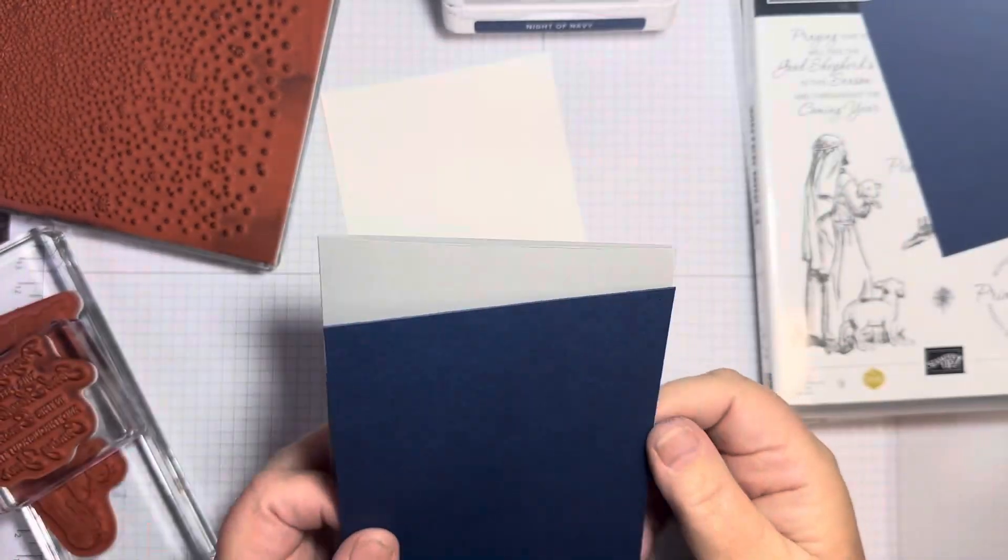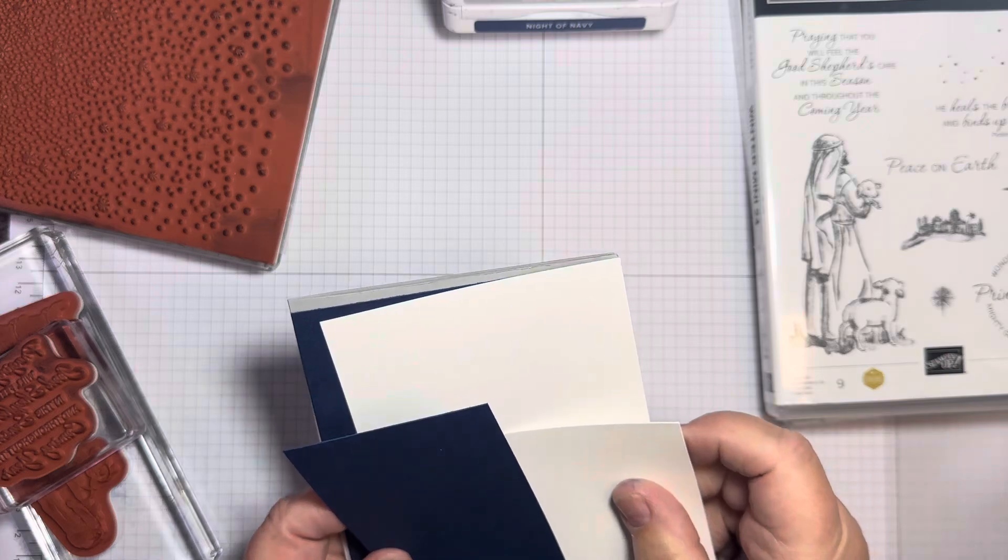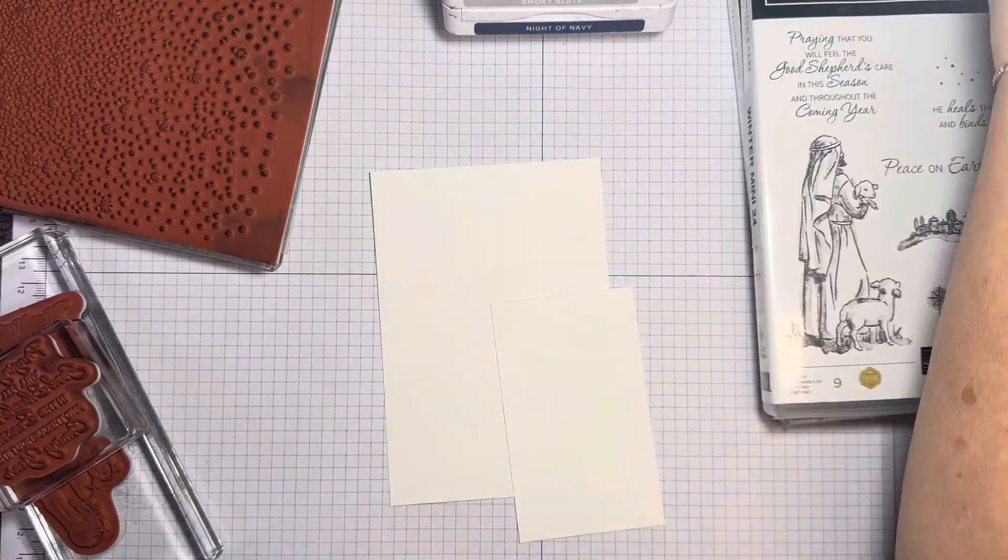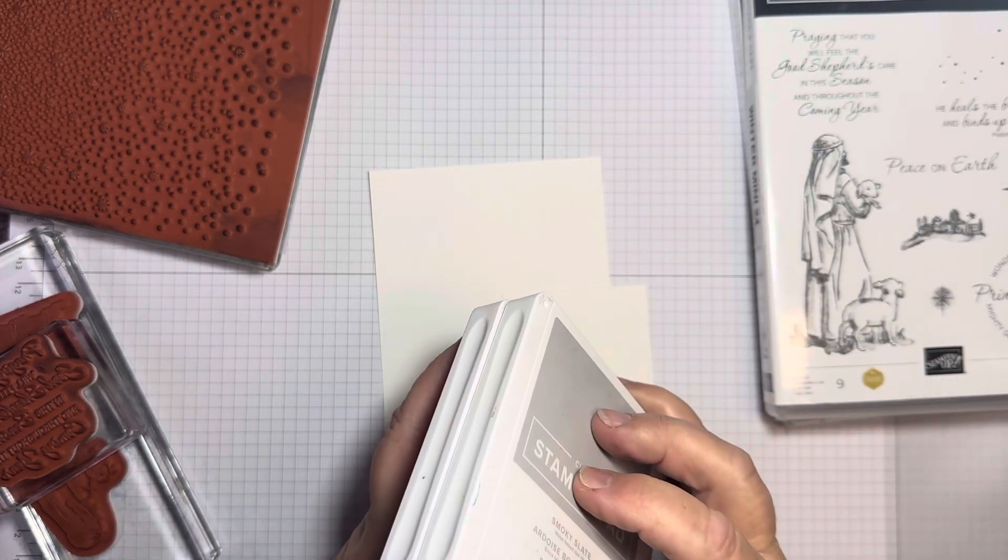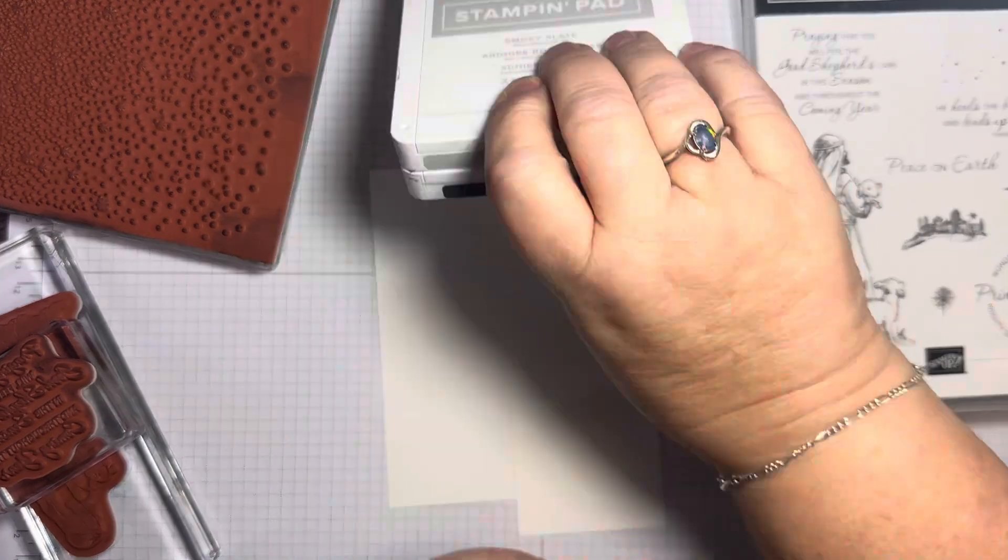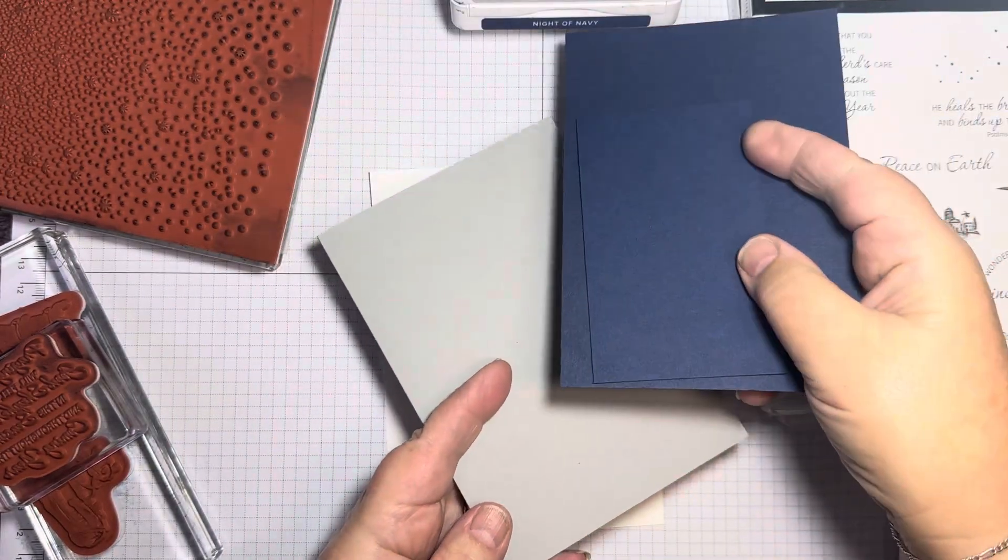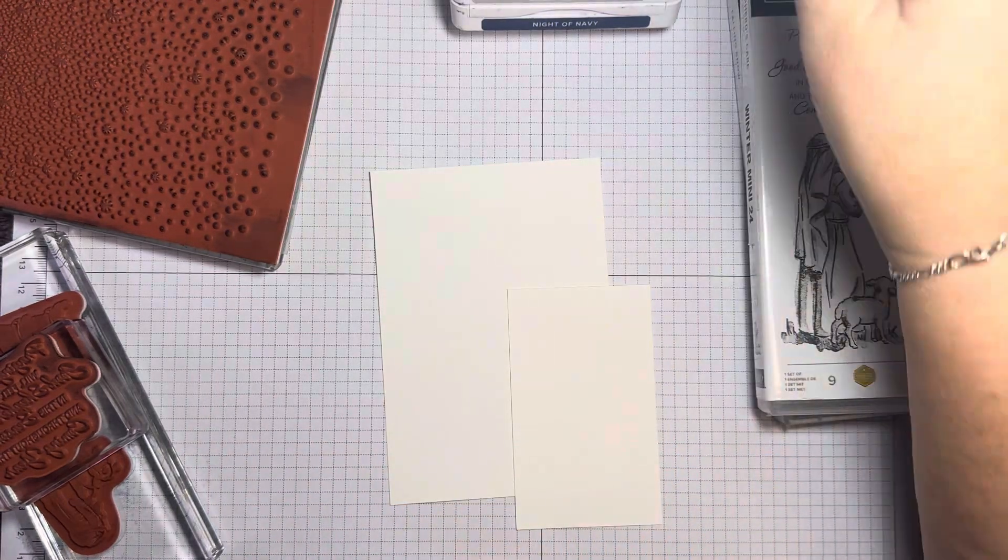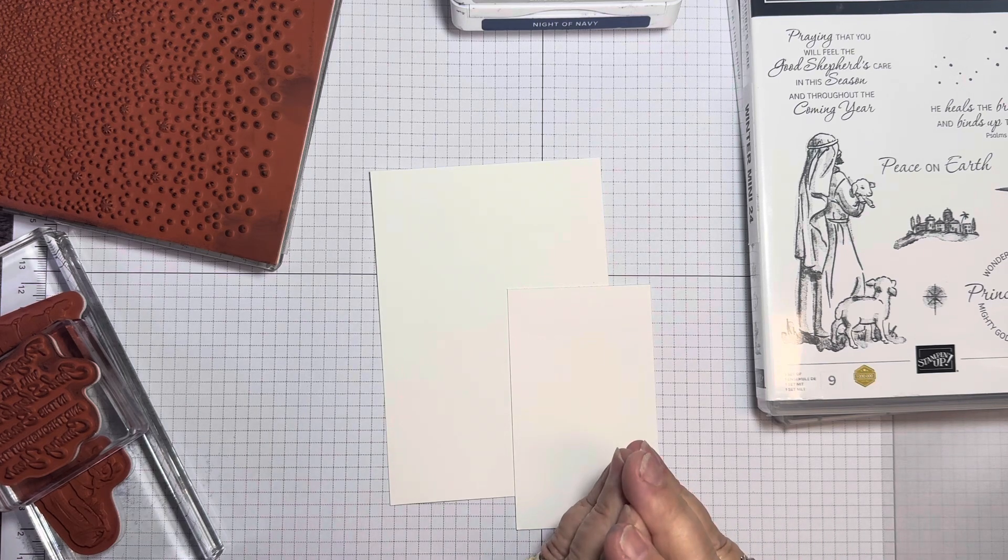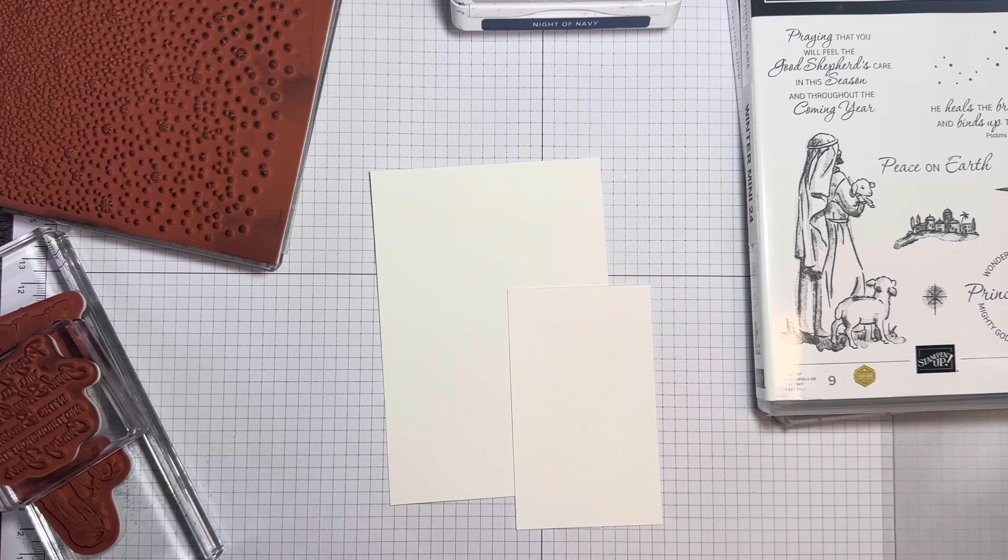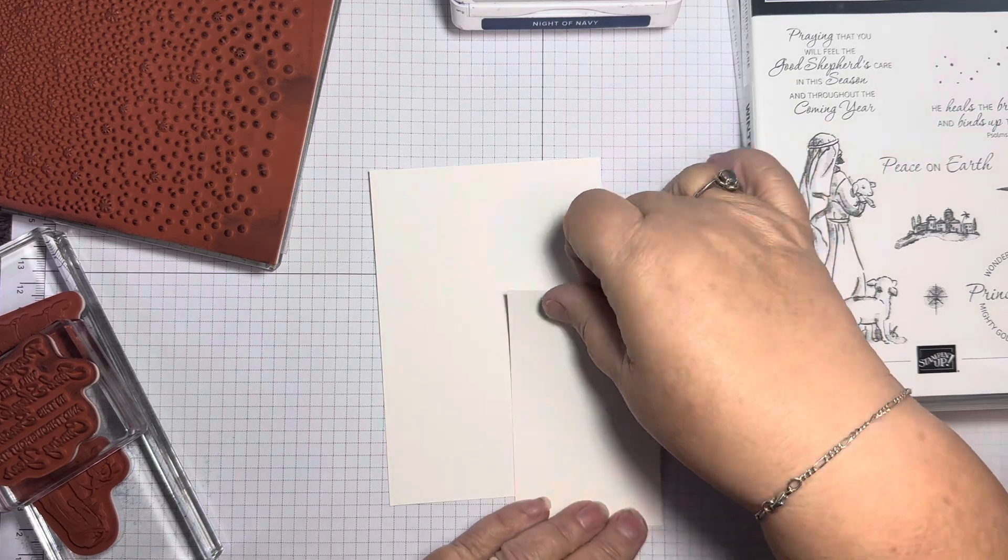So let's, without any further blathers, let's make a card. We've got some Smoky Slate and Night of Navy. Does that surprise you? I've got two layers of white that I'm going to stamp on. I'm going to pop my layers out of the way for the moment, and I've got Smoky Slate ink and Night of Navy, because that is what Stampin' Up is so good for is the matchy matchy. I've got the card that matches the inks.